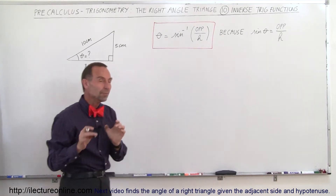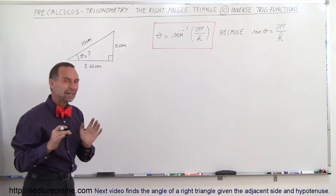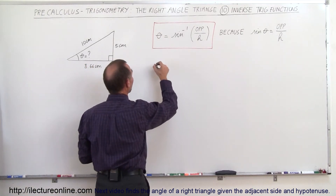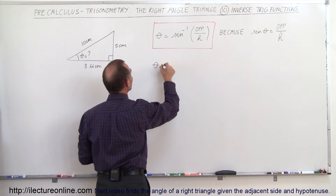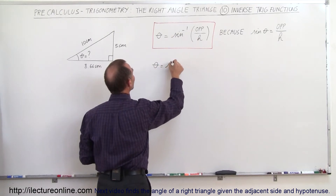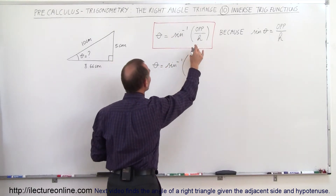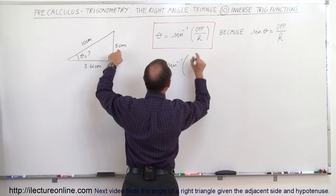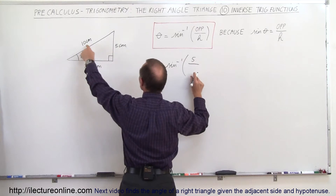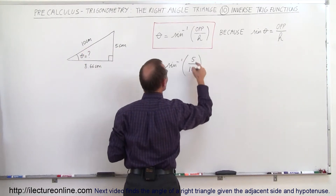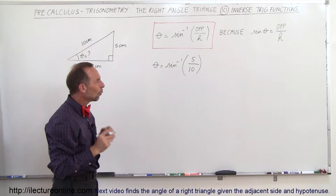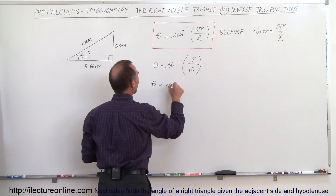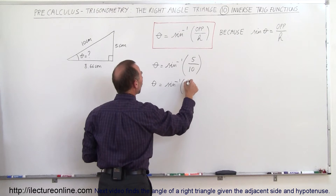If I use the numbers given here, things will probably make sense. Based on this definition of the inverse sine, the angle theta can be found by taking the inverse sine of the ratio of the opposite side to the hypotenuse. The opposite side is 5 centimeters and the hypotenuse is 10 centimeters. Notice that's 5 divided by 10, which is one half. So the angle theta can be found by taking the arc sine of one half.